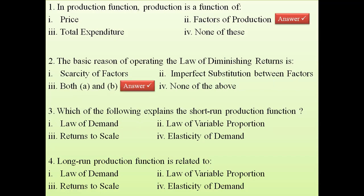Question 3: which of the following explains the short-term production function? Options are law of demand, returns to scale, law of variable proportion, and elasticity of demand. The law of variable proportion is always for the short-term production function, while returns to scale is for the long-term production function — a distinction clearly covered in the lecture series.